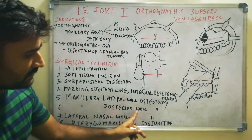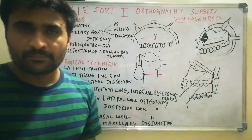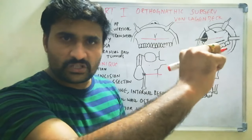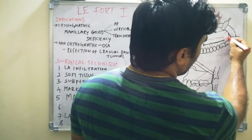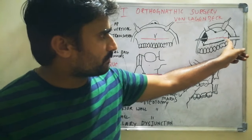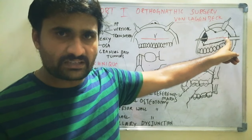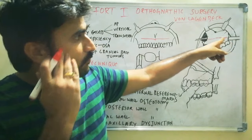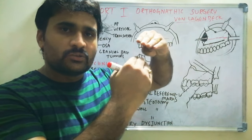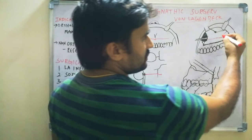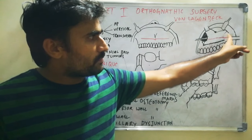After the lateral wall osteotomy, prepare the posterior wall osteotomy behind the maxillary tuberosity. Some suggest making a vertical step first, then giving the posterior cut down to the pterygomaxillary junction. So the lateral wall osteotomy and posterior wall osteotomy are completed at this stage.